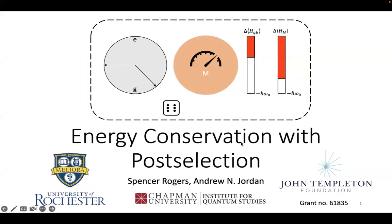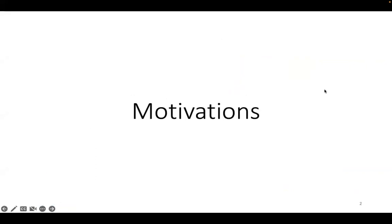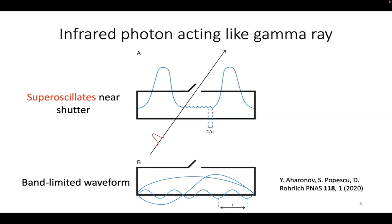I'm going to talk about my work on energy conservation with post-selection. My window into this field of quantum energetics was a paper by Aharonov, where they consider a particle in a box. That particle has a wave function with Fourier components, and those Fourier components have a maximum frequency—it's band-limited. Nevertheless, the particle's wave function oscillates faster than any of the individual frequencies locally near the middle. We say that it super-oscillates.